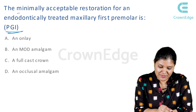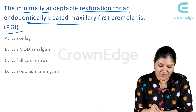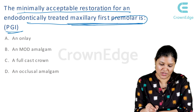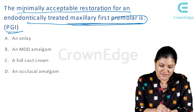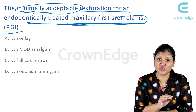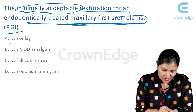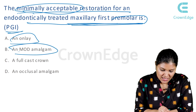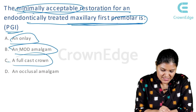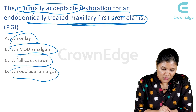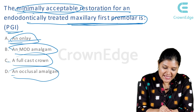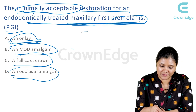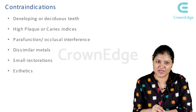This question came in PGI: minimally acceptable restoration for an endodontically treated maxillary first premolar. The options are onlay, MOD amalgam, full cast crown, and occlusal amalgam. So onlay is not indicated for maxillary first premolar — it is the minimally acceptable restoration.